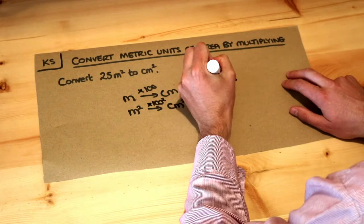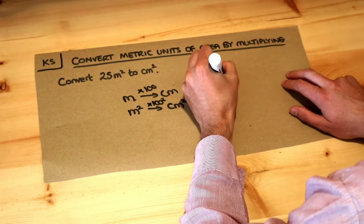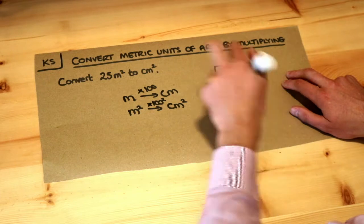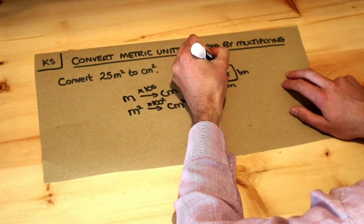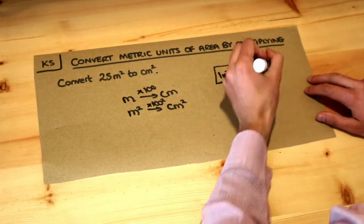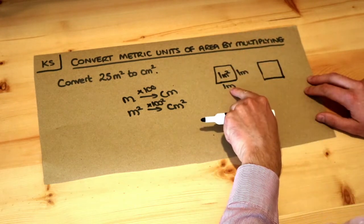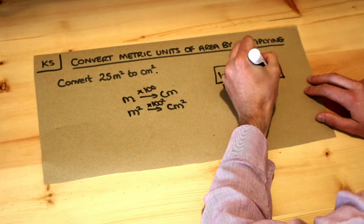Let's just say I had a 1 metre by 1 metre square. What would the area be? Well it would be 1 times 1, which is 1 metre squared. That would be the area of that square. But what if I replaced it with centimetres instead? Well, 1 metre is 100 centimetres.